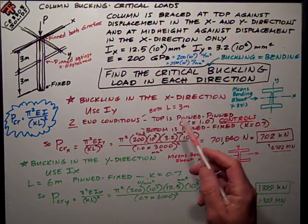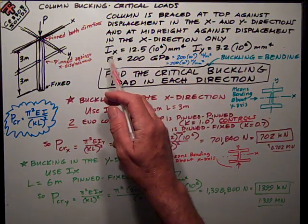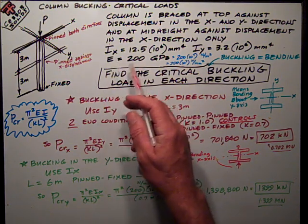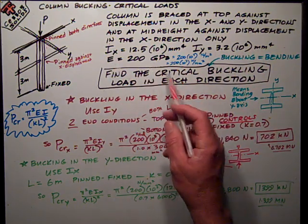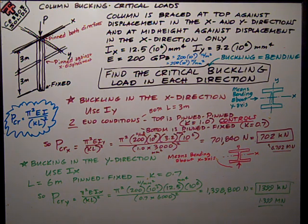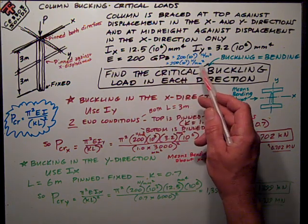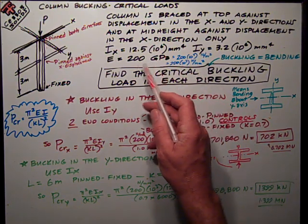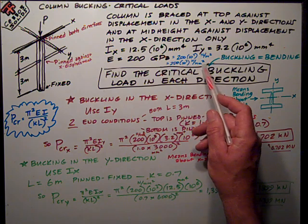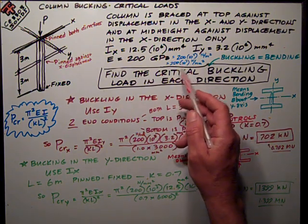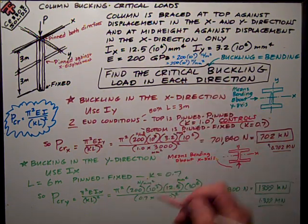So, that's what was stated in the given for the problem. I was also given that IX, the moment of inertia about the X axis, is 12.5 times 10 to the 6 millimeters to the 4th. IY is this. E is 200 gigapascals. Remember, a gigapascal is a billion. It's 200 times 10 to the 9th newtons per meter squared. I convert everything to millimeters squared, so it's really 200,000 megapascals. A megapascal is a newton per millimeter squared.